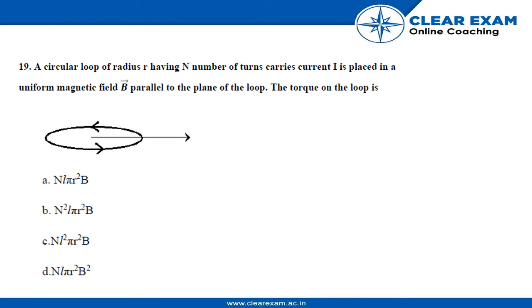In the question, there is a circular loop of radius r having N number of turns which carries current I, placed in a uniform magnetic field B parallel to the plane of the loop. We need to find the torque on the loop.